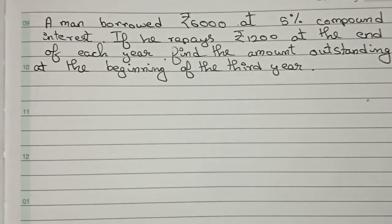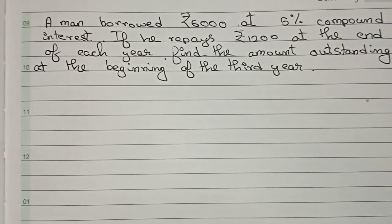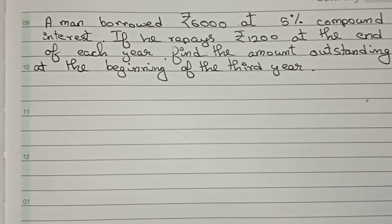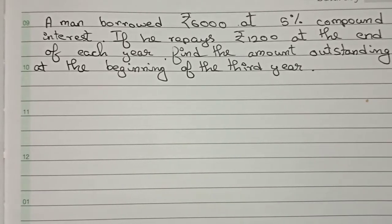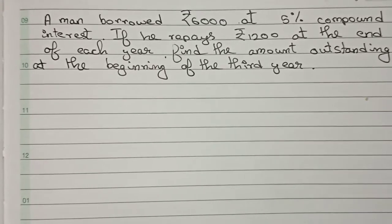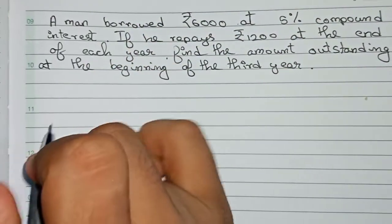Hello guys, welcome to this video. The question is: a man borrowed rupees 6000 at 5% compound interest. If he repays rupees 1200 at the end of each year, find the amount outstanding at the beginning of the third year. So this is the question, and first we will use the simple interest formula.